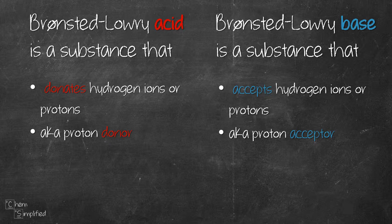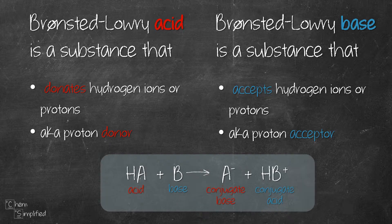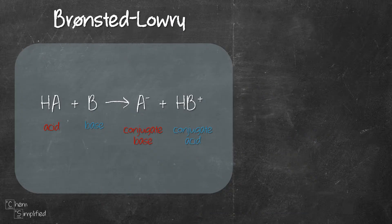If we were to represent the definition of Brønsted-Lowry Acid and Base in an equation, it will look something like this. HA represents acid while B represents base.